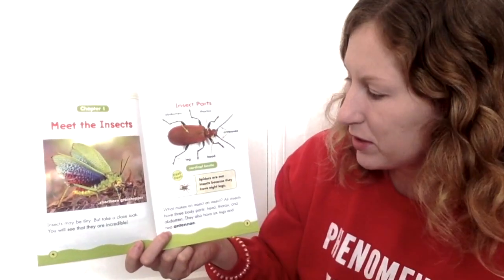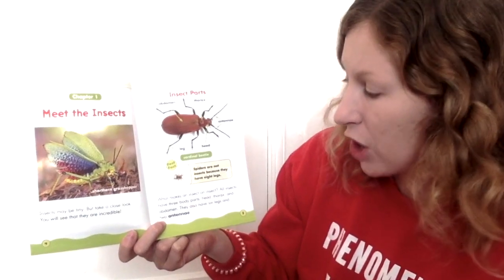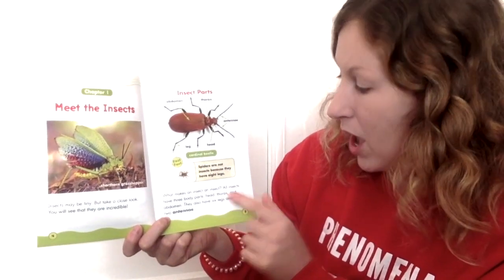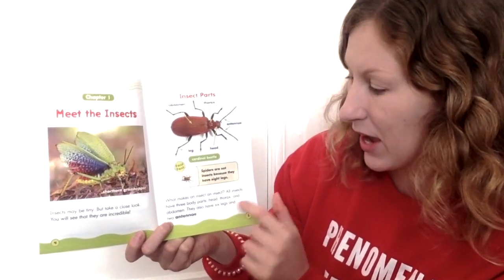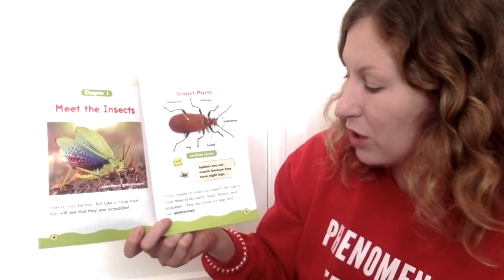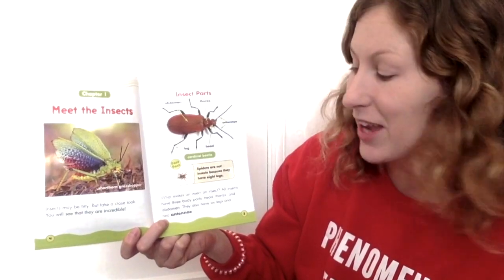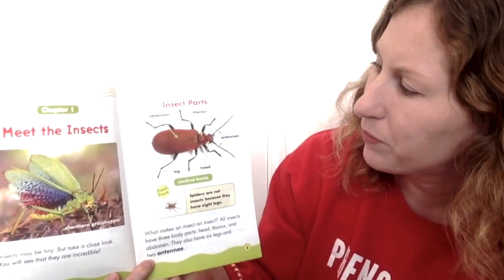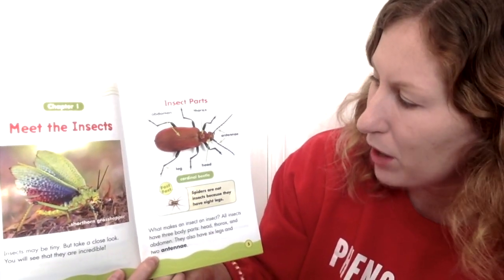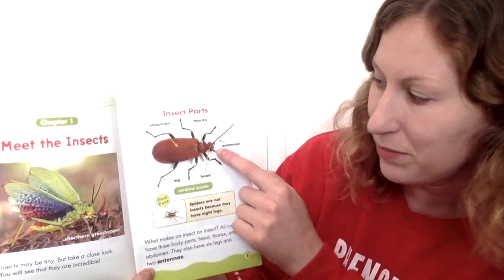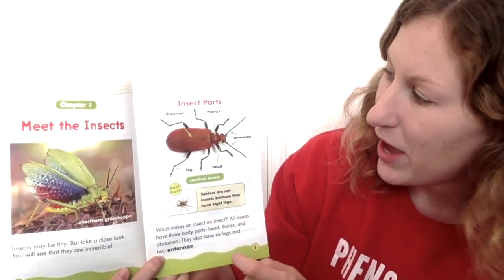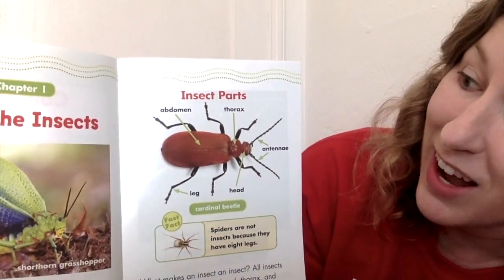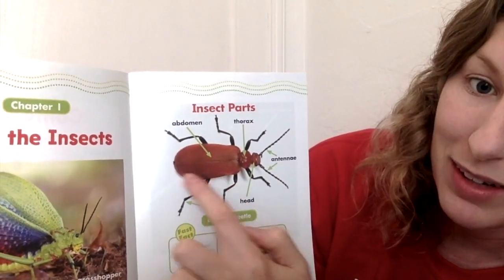Insect parts. What makes an insect an insect? All insects have three body parts: head, thorax, and abdomen. They also have six legs and two antennae. Let's look at the insect parts. They have their head, they have their thorax, which is in between their head and the next body part which is the abdomen.